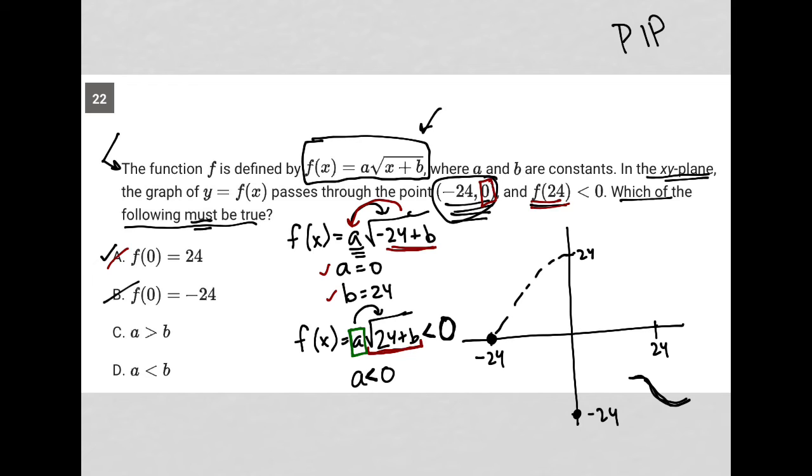So now I have some conflicting information because here I have as a possibility a = 0. Here I have as a requirement a < 0. So I'm going to go with the requirement versus the possibility. So I'm going to cross out a = 0, because again, a has to be less than zero. So then here's what I have. I know that b = 24 and I know that a < 0. So that means I know that my function f(x) = a√(x + 24). Again, I know that b is 24, so plus 24. And I know that a has to be less than zero.